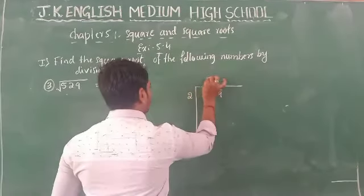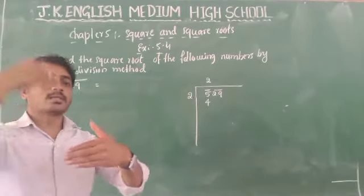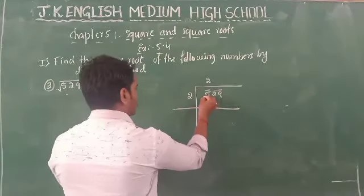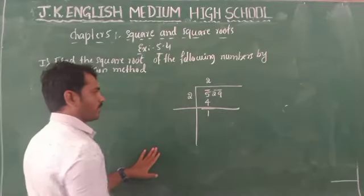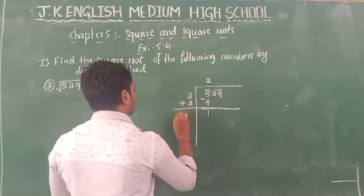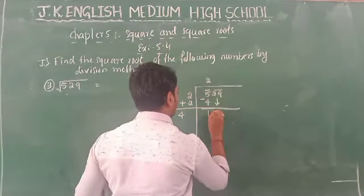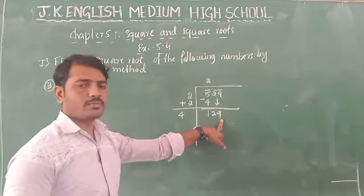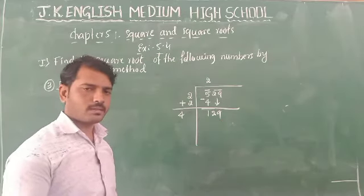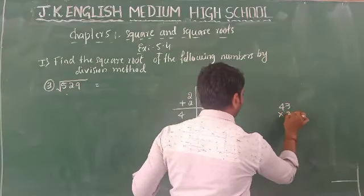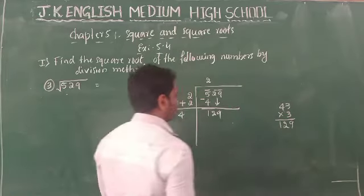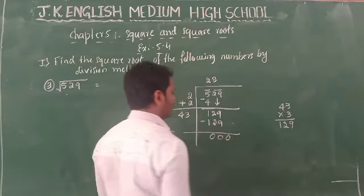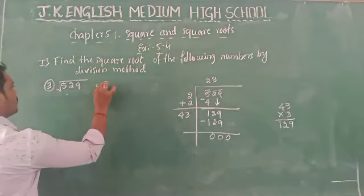We check: 2×2=4, and if we take 3, then 3×3=9, which is more than 5, so we take 2. 2×2=4, which is less than 5. Subtract: 5 minus 4 equals 1. Bring down 29, giving 129. Double the quotient: 2+2=4. Now with divisor prefix 4, we try 43×3=129. Yes, 43×3=129, and 129 minus 129 equals 0. The square root of 529 is 23.